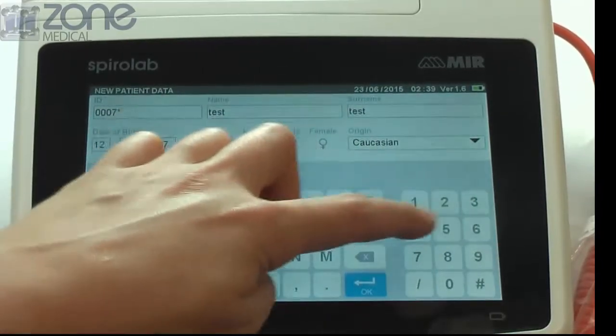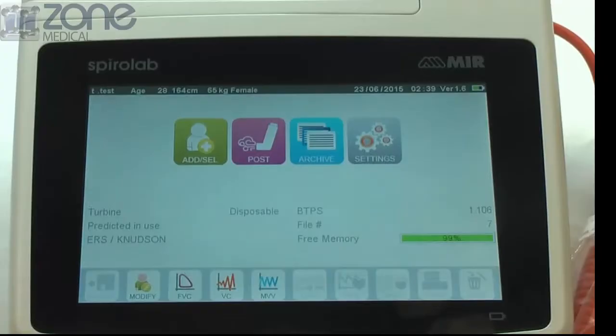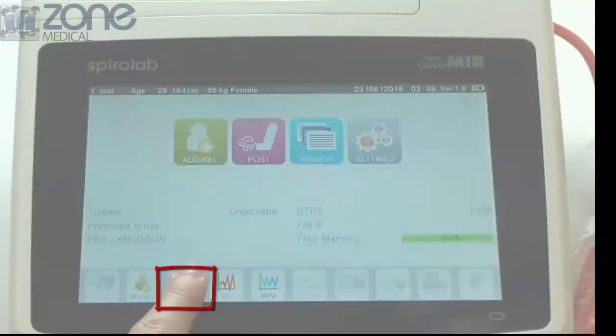You may then press save and exit and all patient details will appear at the top of the page. Press FVC to measure the forced vital capacity.